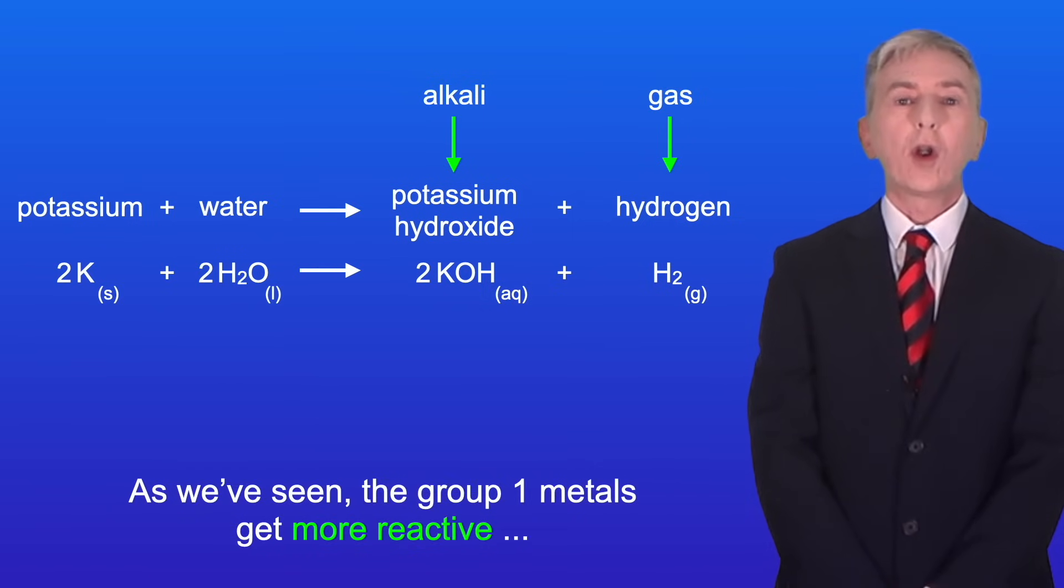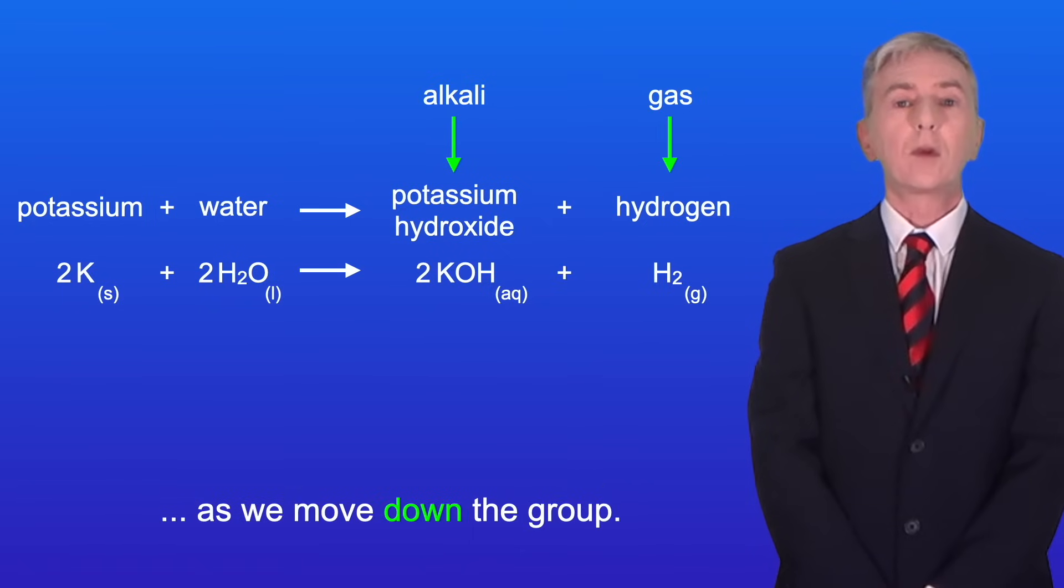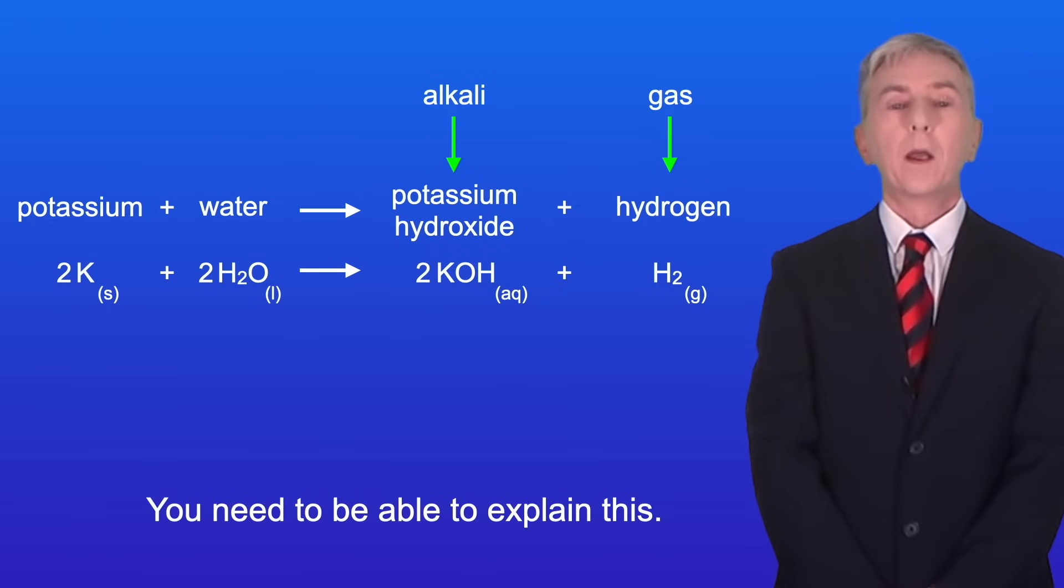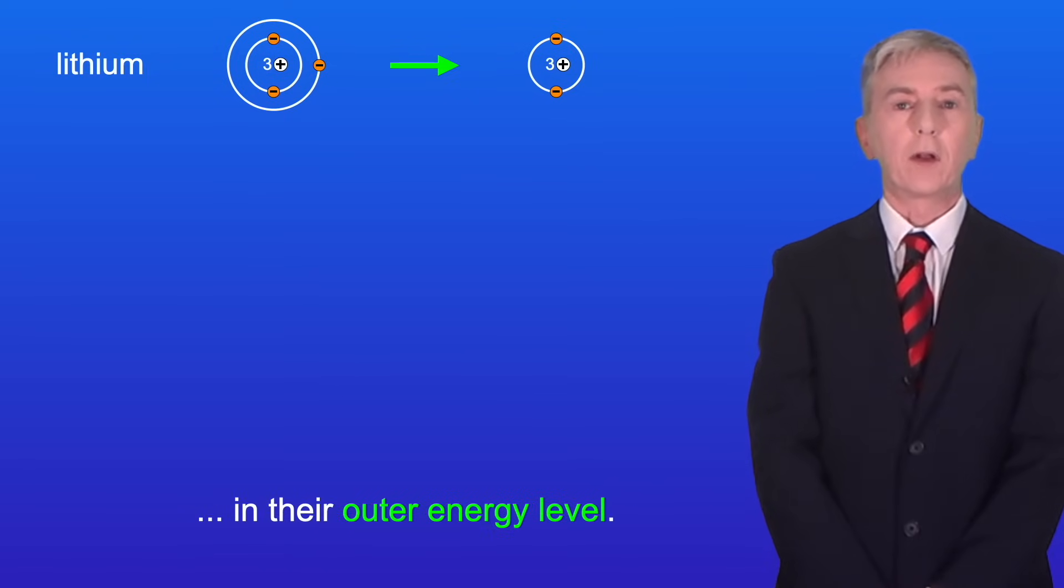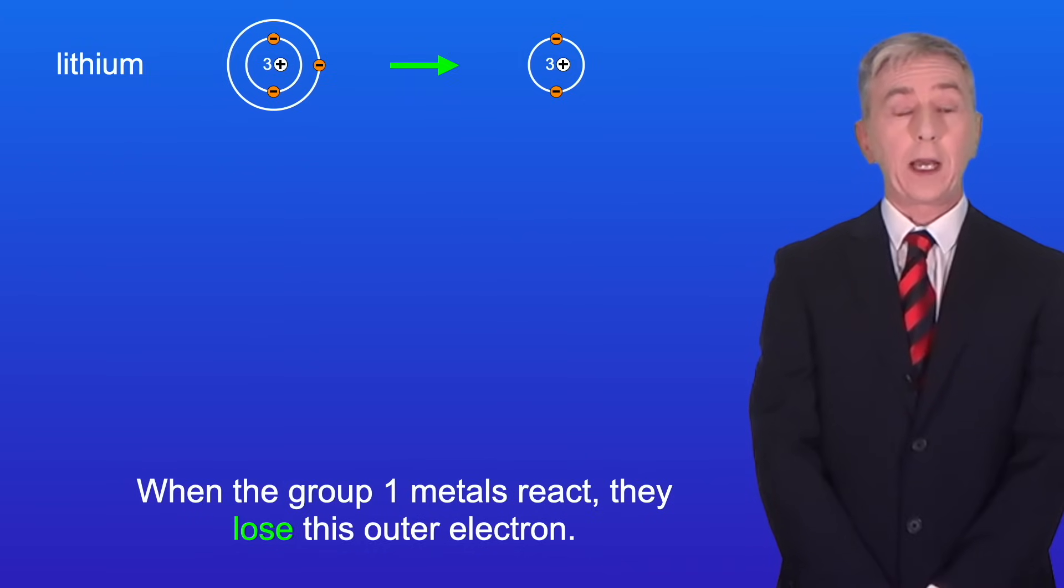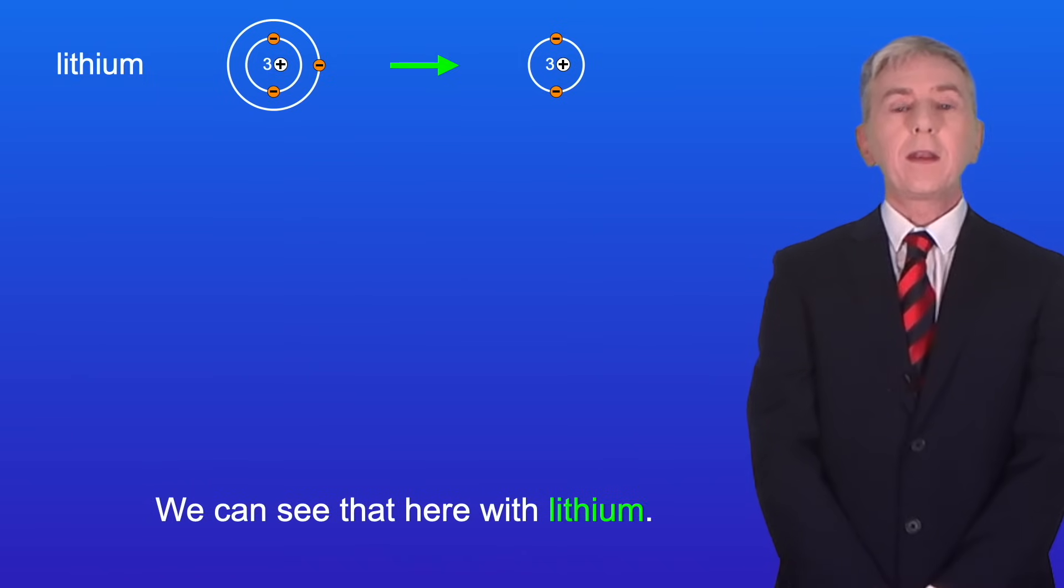So as we've seen the group 1 metals get more reactive as we move down the group. And you need to be able to explain this. All of the group 1 metals have one electron in their outer energy level. And when the group 1 metals react, they lose this outer electron. We can see that here with lithium.